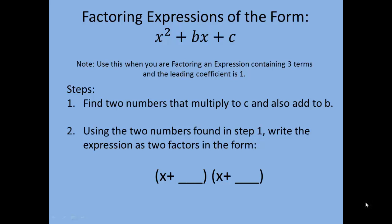This is a video on factoring expressions of the form x squared plus bx plus c. Note that b and c are constants and x squared and x are variables. You will use this when factoring an expression that contains three terms and the leading coefficient is one, meaning the number in front of x squared is always one when you use this factoring method.